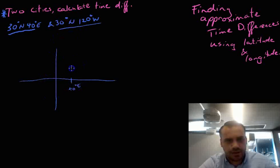And it's 30 degrees north so it's up here somewhere and 120 degrees west, it's going to be all the way over here somewhere and in the same line. So we're finding these two cities and we're finding the time difference between them.